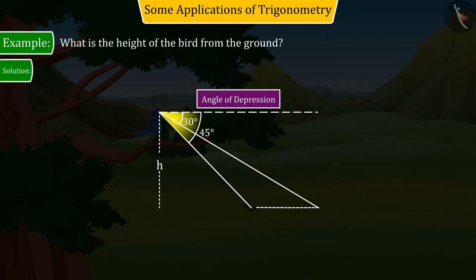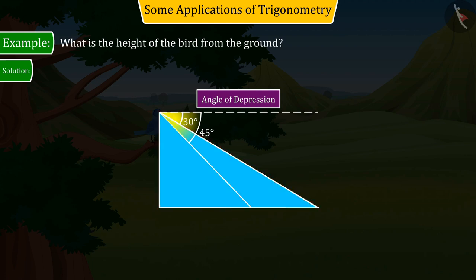With the help of the given information, let us construct the figure. Let MN be the height of the bird from the ground, denoted by h.